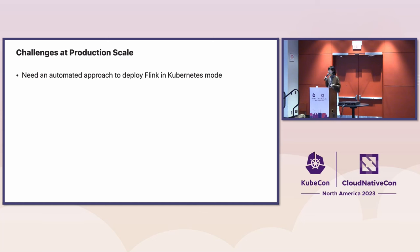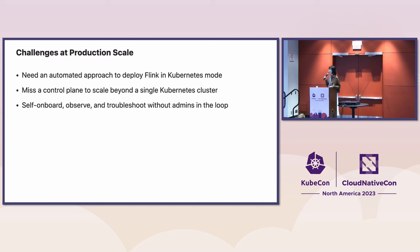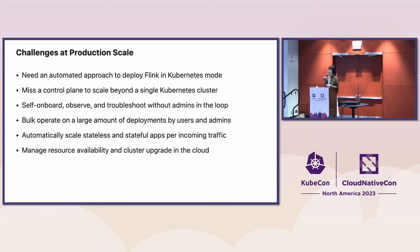With Flink and Kubernetes, there are still challenges when moving to production at large scale. First, we need an automated approach to deploy Flink on Kubernetes, and we want a control plane that can scale beyond a single Kubernetes cluster. We want to help users self-onboard, observe, and troubleshoot their applications without admins in the loop. We also need to support bulk operations across large numbers of deployments — and automatic scaling not just for stateless streaming applications, but also stateful ones. Managed resource availability and cluster upgrades in the cloud environment are additional challenges.